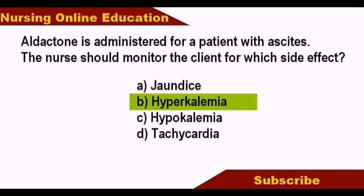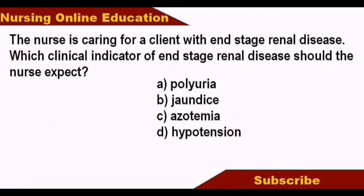The nurse is caring for a client with end stage renal disease. Which clinical indicator of end stage renal disease should the nurse expect? Options: polyuria, jaundice, azotemia, hypertension. The answer is azotemia. In end stage renal disease, urine output decreases and waste materials accumulate in the blood.